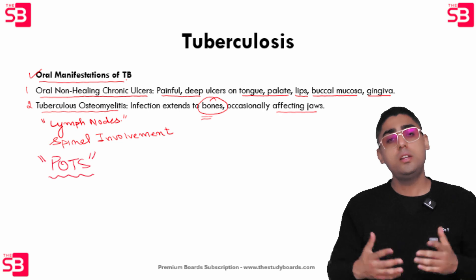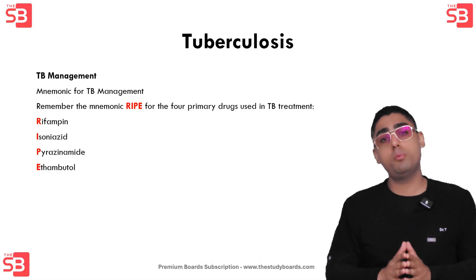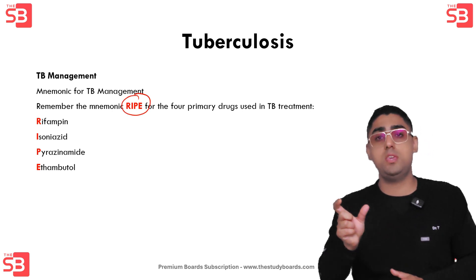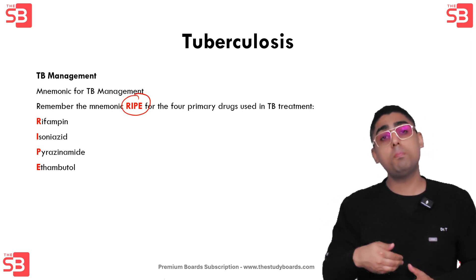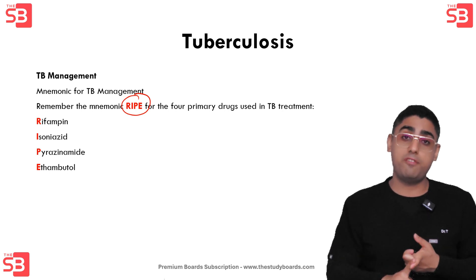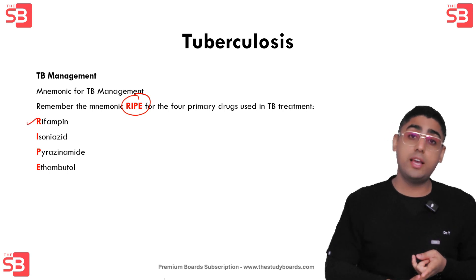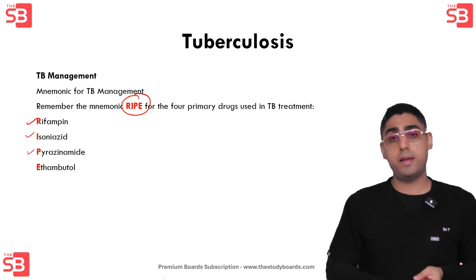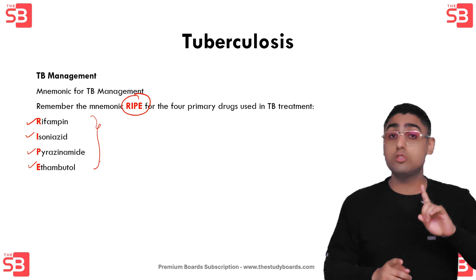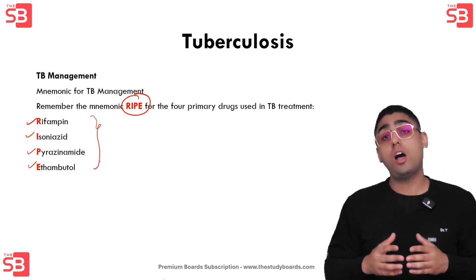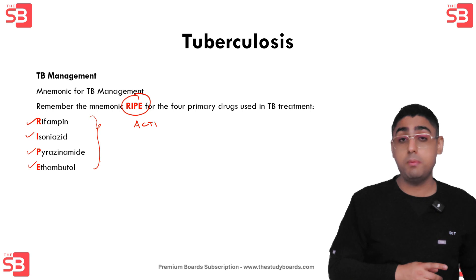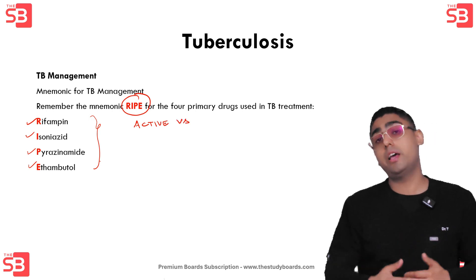For the management of tuberculosis, remember the mnemonic RIPE for the four primary drugs used in TB treatment: R for rifampin, I for isoniazid, P for pyrazinamide, and E for ethambutol. Remember this is compared to treating latent TB, where the patient is treated only with isoniazid.